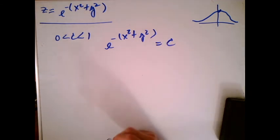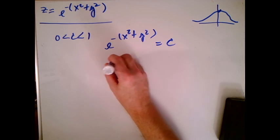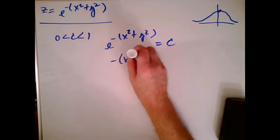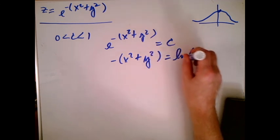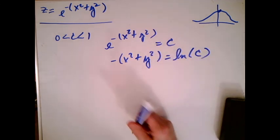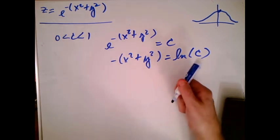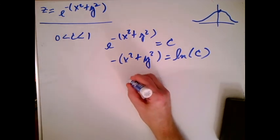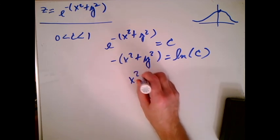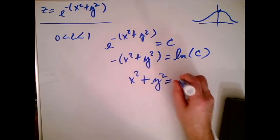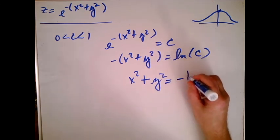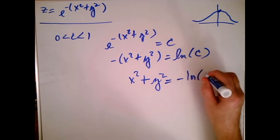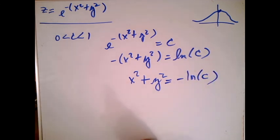I'm going to see e to the minus x squared plus y squared equals c. And I'd like to know what that is. I'm going to take the ln of both sides. So I'm going to get minus x squared plus y squared equals the ln of c. Now, remember, by the way, that if c is a number between zero and one, the ln is negative. So this actually makes some sense. So I'm going to get x squared plus y squared equals minus the ln of c like this. And what is that? That is a circle.